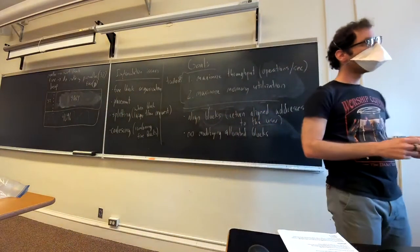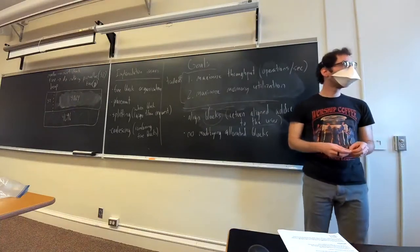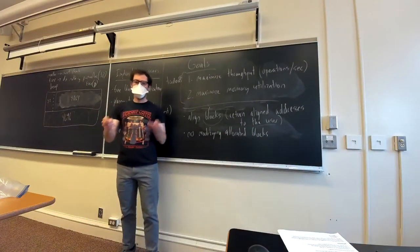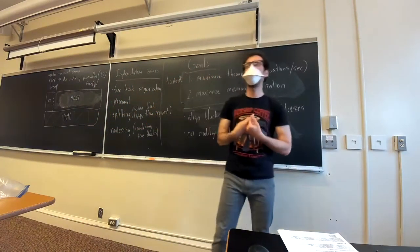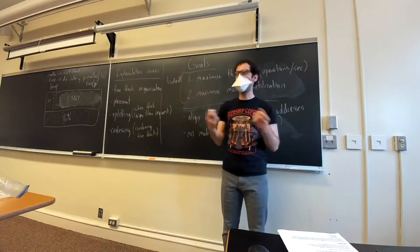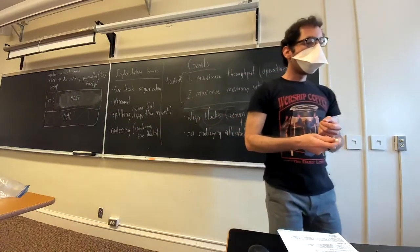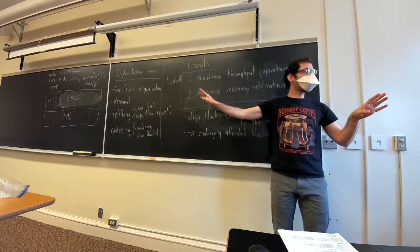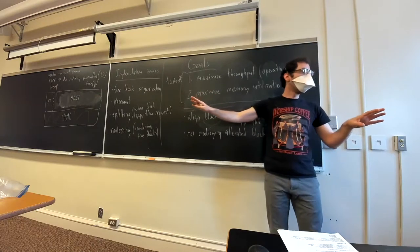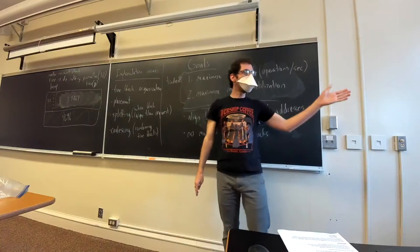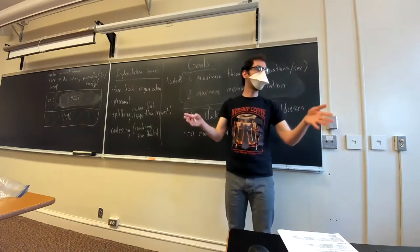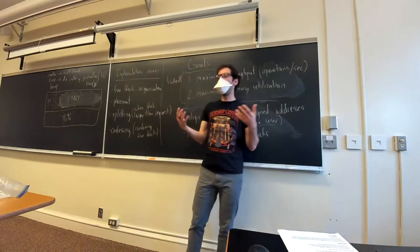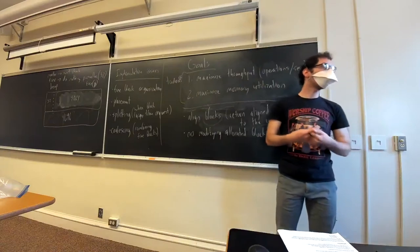An important point about coalescing: if a user asks for 1000 bytes on the heap, we can't give them four separate chunks of 250 bytes, because we only return one pointer and the user has to assume all 1000 bytes start at that point. So combining blocks only makes sense for adjacent blocks.